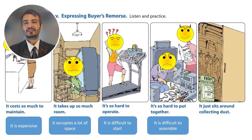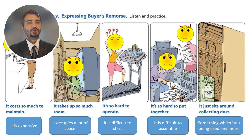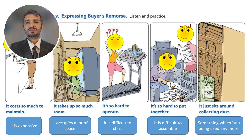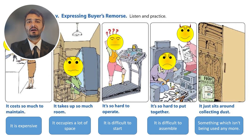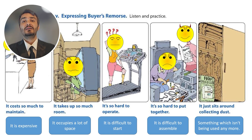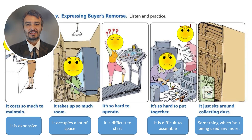'It just sits around collecting dust' — a beautiful expression. There is an object nobody uses, nobody touches, nobody even looks at — maybe in the basement, an old radio, cassette player, or gramophone. In that scenario you can say 'it just sits around collecting dust.'